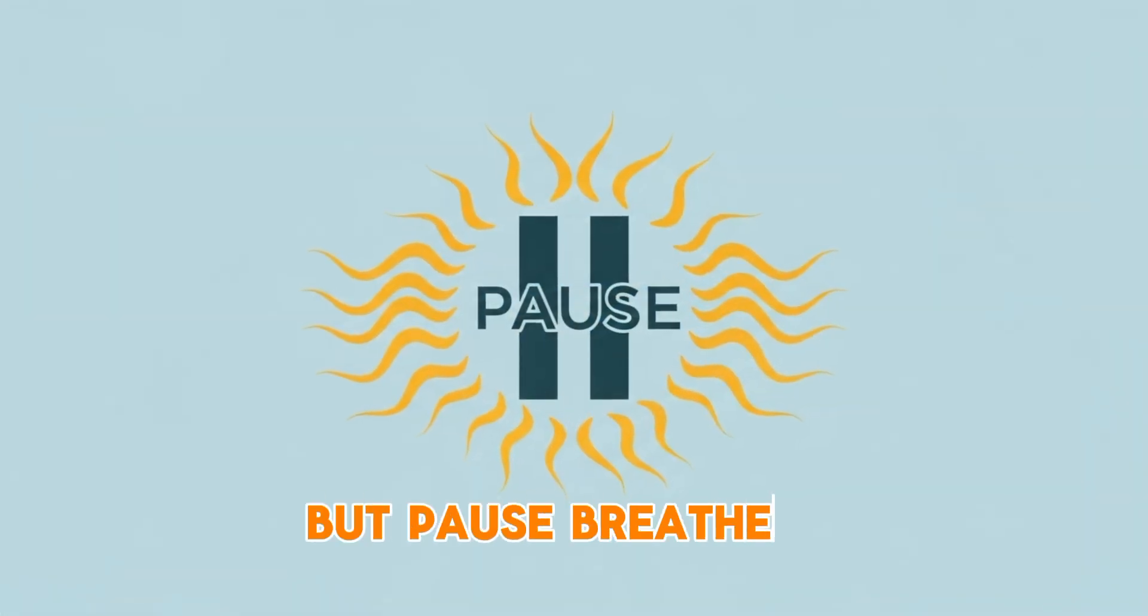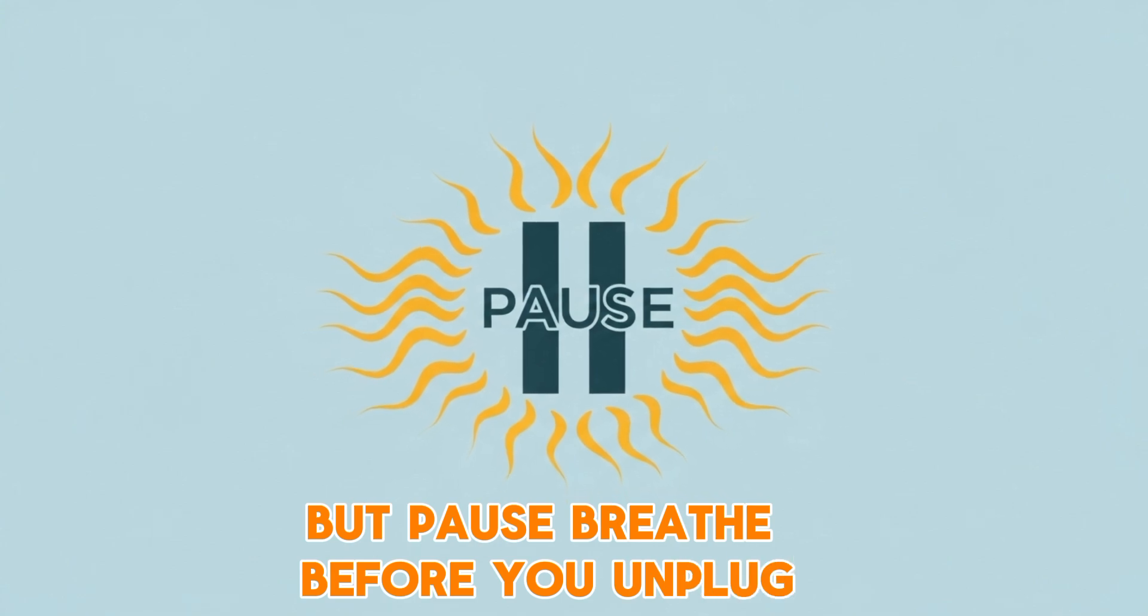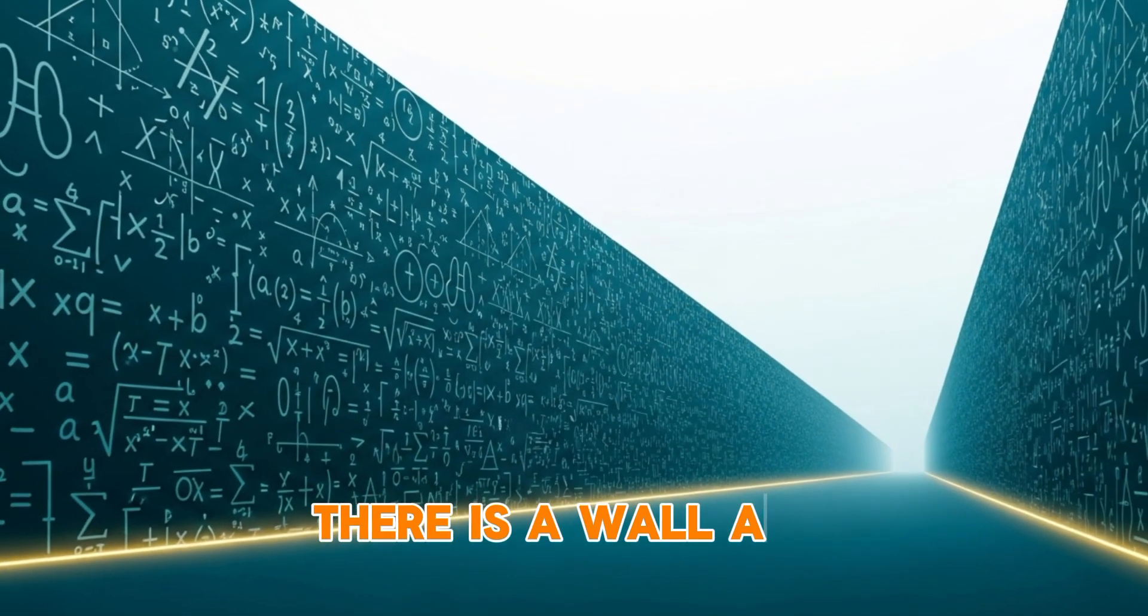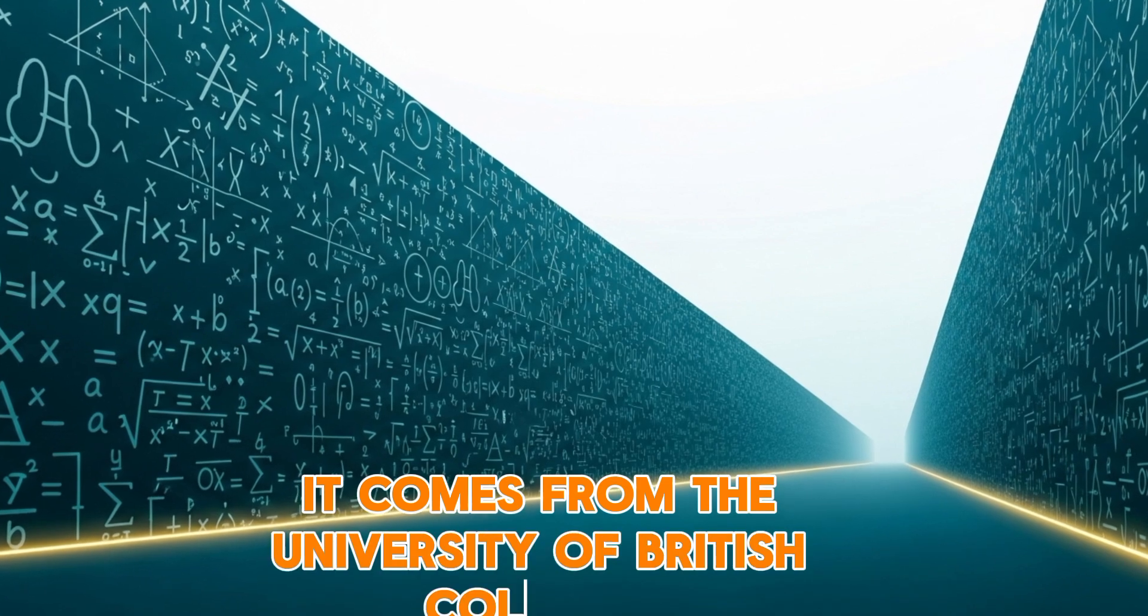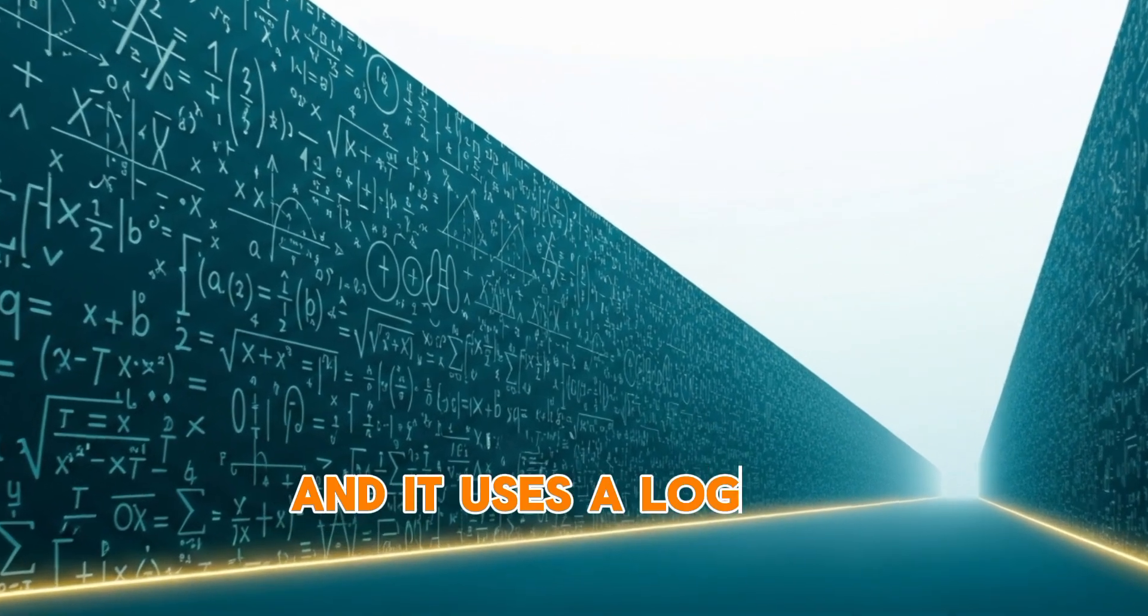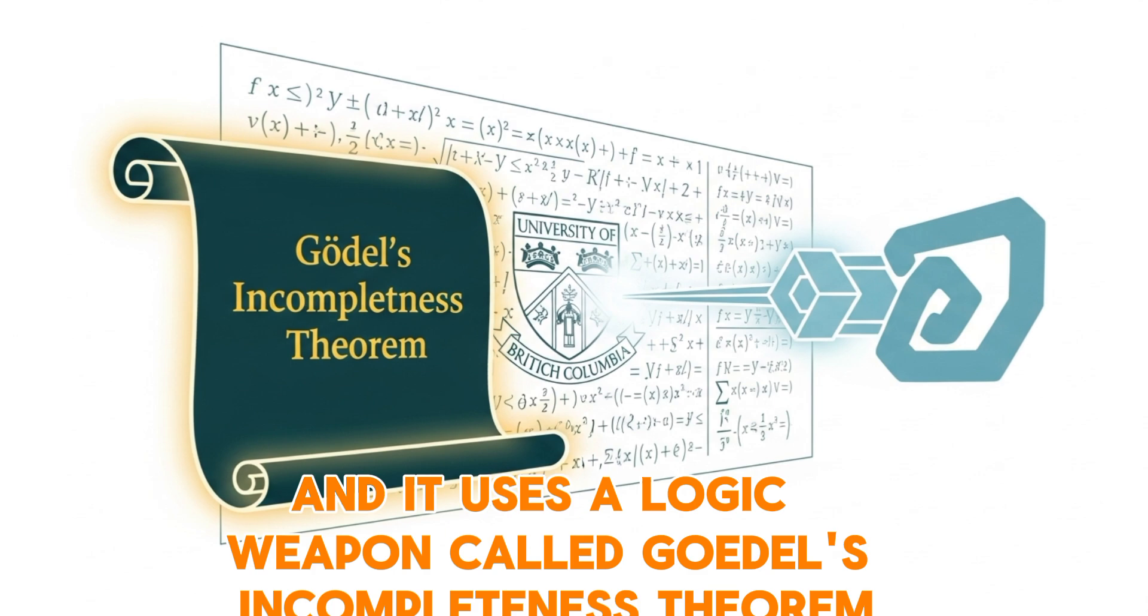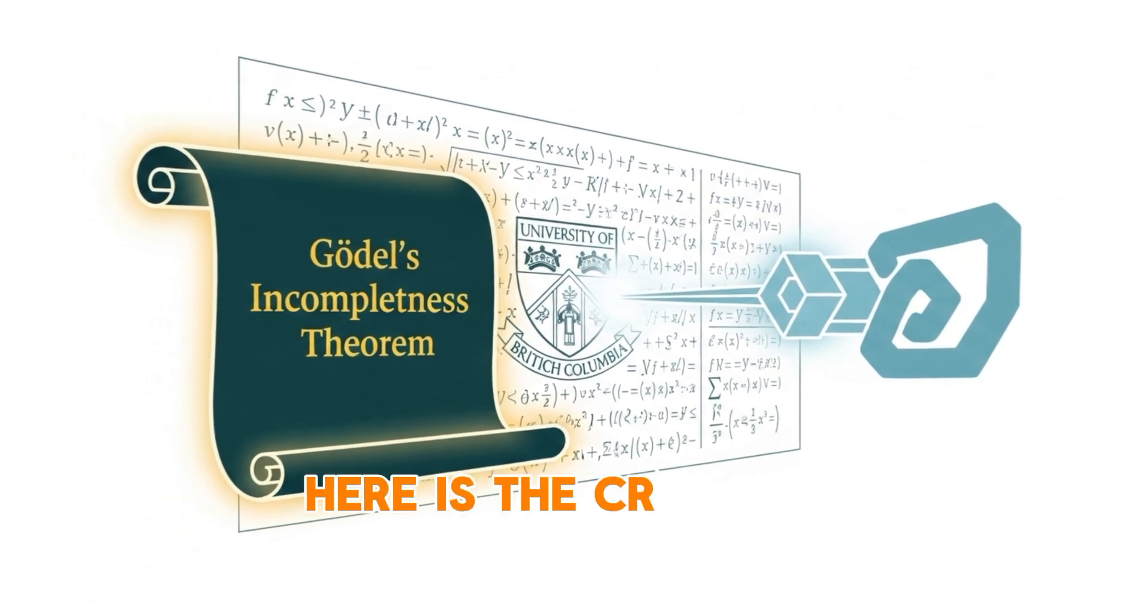But pause. Breathe. Before you unplug, there is a wall. A mathematical wall. It comes from the University of British Columbia, and it uses a logic weapon called Godel's incompleteness theorem. Here is the crux.